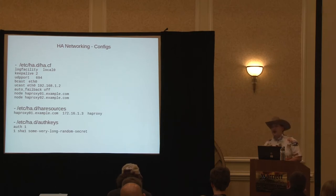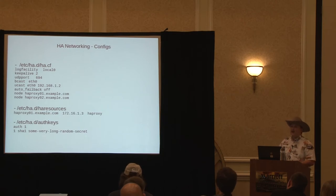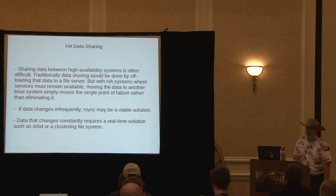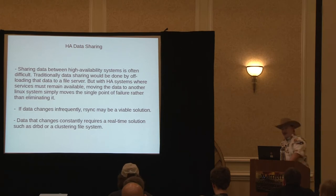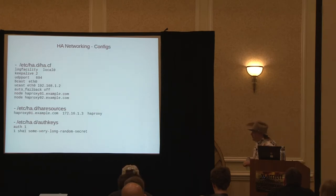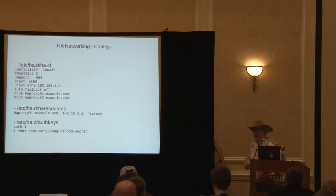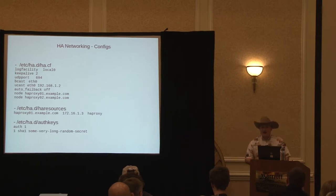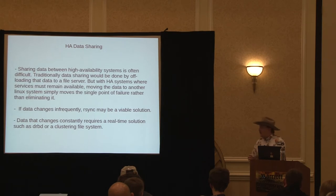In HA resources, the first line is your primary node — HAProxy01.example.com. Everything else is resources to share. The first resource we're sharing is an IP address, 172.16.1.3. There are other options where you can pass different netmasks, different gateways, different NICs to spin up on. The next entry, HAProxy, says to start the HAProxy service — basically that runs /etc/init.d/haproxy start. If you're using Slackware, you'll have to add that file yourself for most things because it uses a more sane init structure.